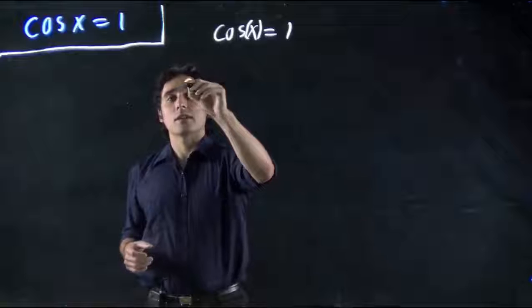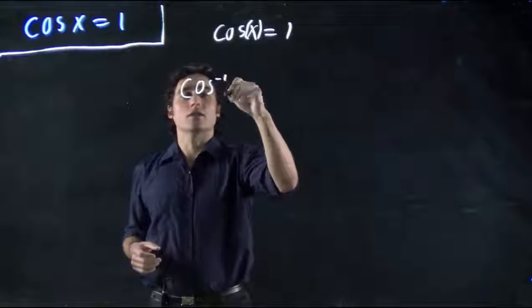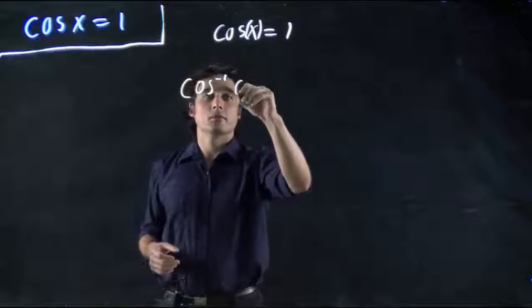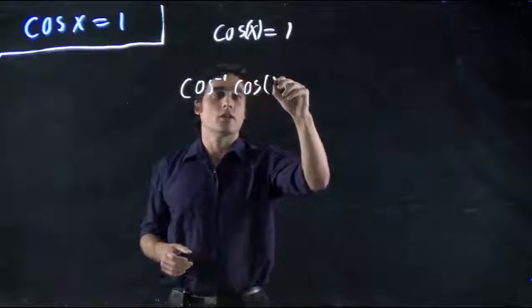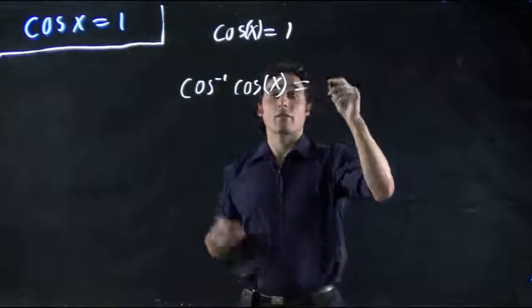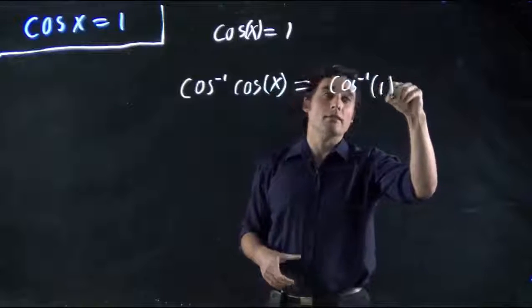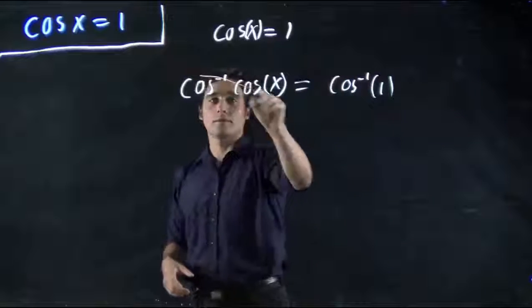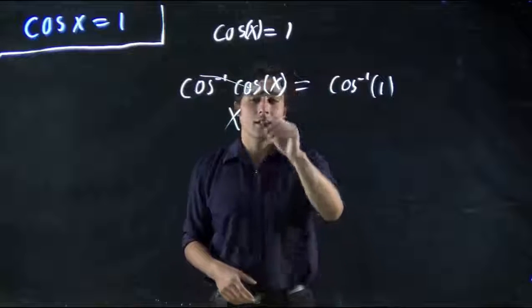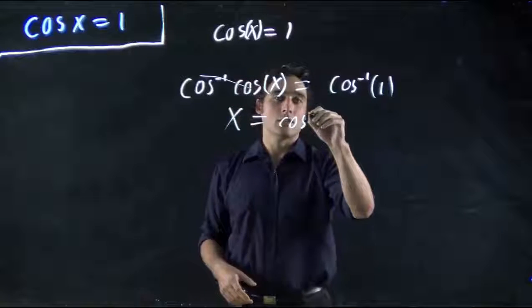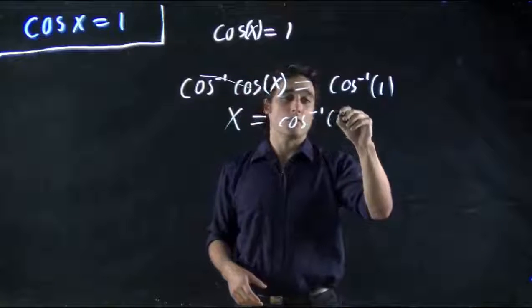So the opposite of cos is actually cos to the minus 1. So cos to the minus 1 of cos of x. And as always, we have to do this to both sides. Cos to the minus 1 of 1. Well, these two will cancel. And all we're going to be left with on the left-hand side is x. x equals cos to the minus 1 of 1.